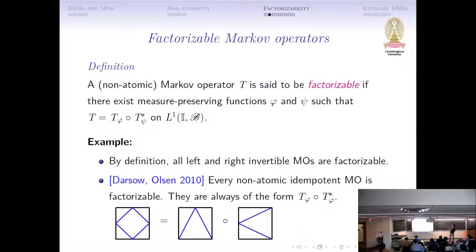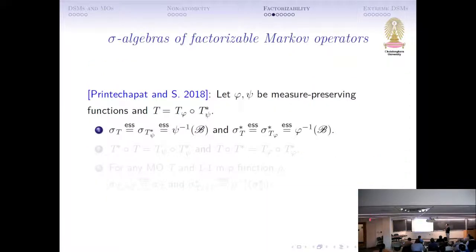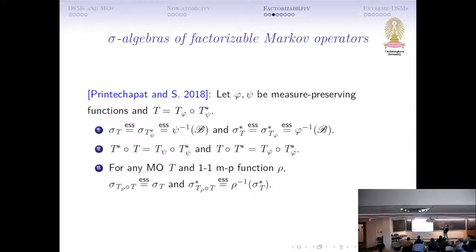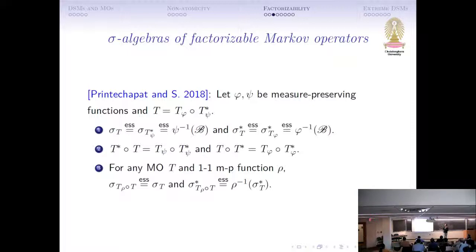That's why we defined factorizable Markov operators as a Markov operator factorizable as a product of left and right invertible on the whole space. By definition, all the left and all the right invertible Markov operators are factorizable, by taking one of them to be two-sided invertible. We have some examples: you can take any T_phi and any T_phi star, multiply them, and you always get a non-atomic Markov operator. This page contains some technical properties of factorizable Markov operators. The key one is: if you have a product of left invertible and right invertible Markov operators and take sigma_T, this will be completely determined by psi; and sigma_T* on the horizontal axis will be completely determined by phi.